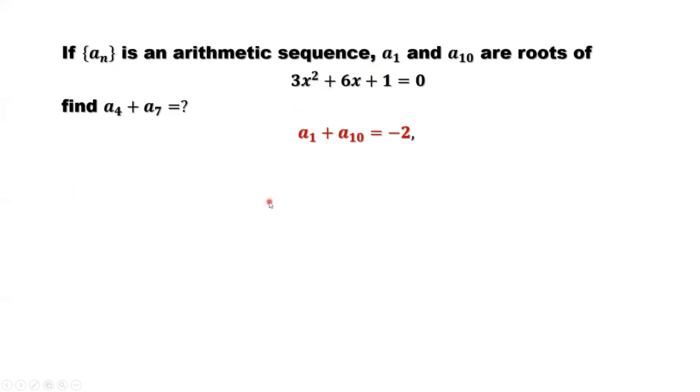This means we can rewrite A10 in terms of the first term, A1. A1 plus 9D will be A10. What is D? D is the common difference in this arithmetic sequence.